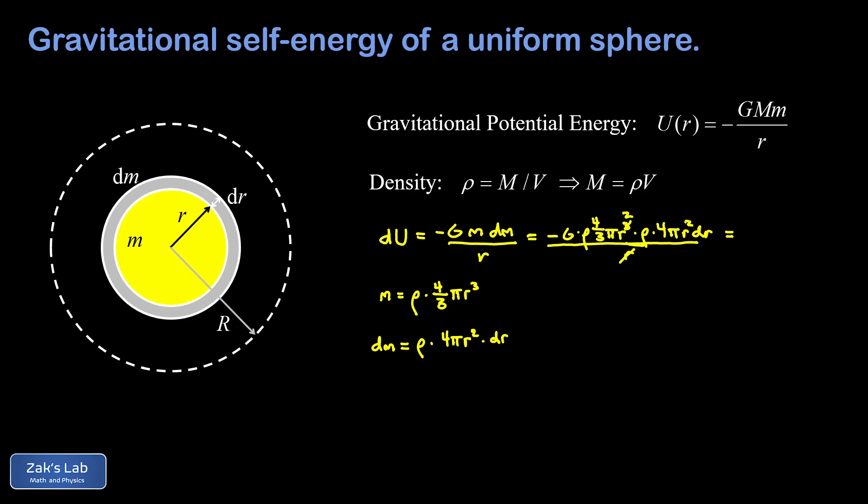We'll proceed by combining all the constants that we see here. So I have a four thirds and a four that gives me 16 thirds. Moving all the constants out in front, I have a negative 16 thirds times G, then we have two factors of rho so I have a rho squared, two factors of pi so I have a pi squared, and then four remaining factors of r so I have an r to the fourth, and then dr. So there's our completed expression for the increment of gravitational potential energy that we get from bringing in this infinitesimal mass of dm.